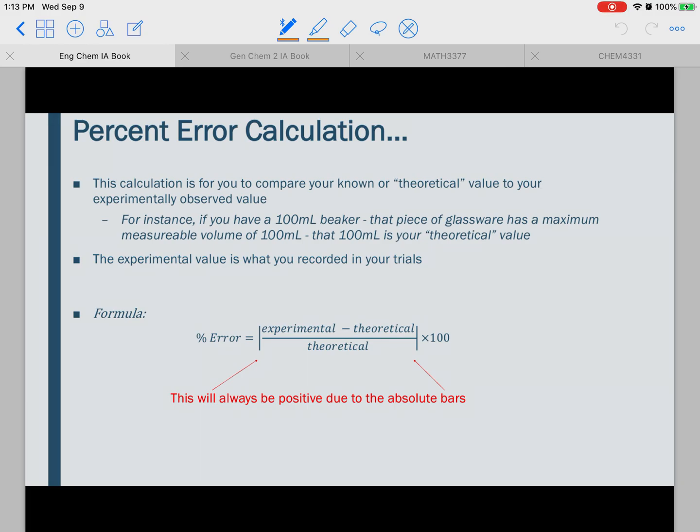So just some quick calculations. Percent error calculation is one we're going to be using in this lab. So this calculation is for you to compare your known or theoretical value to your experimentally observed value. So the formula for percent error is right here. So that is your experimental value minus your theoretical value divided by your theoretical value times 100. But what we also want you guys to remember is that the formula has these absolute bars on the side right here, which means that any number that's in here will always be positive. So don't forget about the absolute value bars.